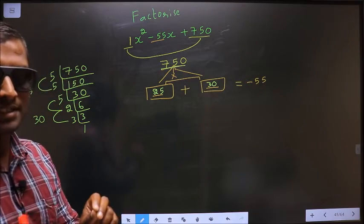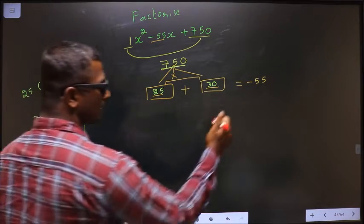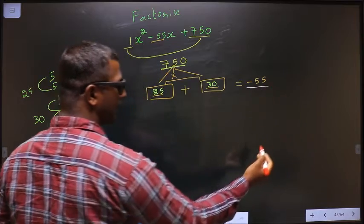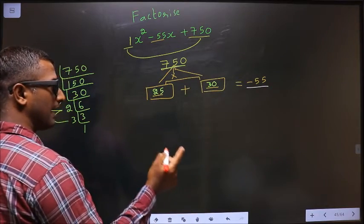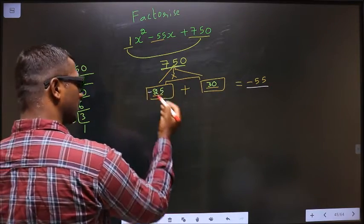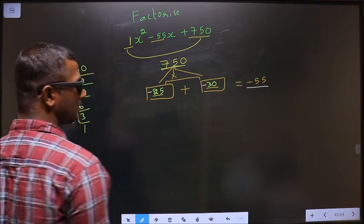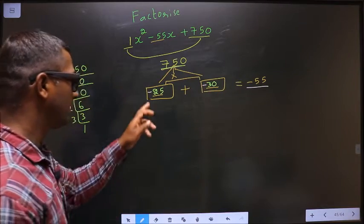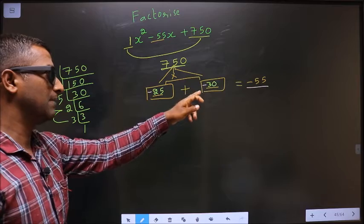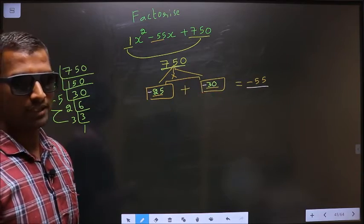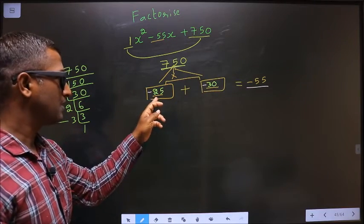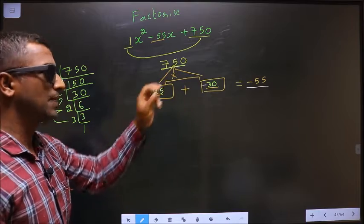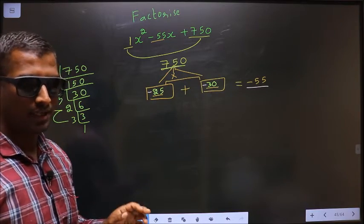Now you should adjust the signs. Here you should get -55. That could only happen if you put minus before this number and also before this number. -25 - 30 = -55, and -25 × -30 = +750.